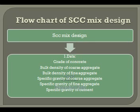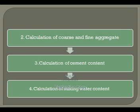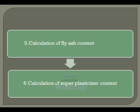The flowchart of the SCC mix design shows the total work involved. First, data is collected from basic tests: bulk density of coarse and fine aggregate, and specific gravity of coarse aggregate, fine aggregate, and cement. Then calculations are performed step by step — coarse and fine aggregate contents, cement content, mixing water content, fly ash content, and super plasticizer content.